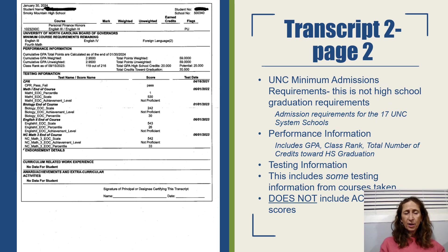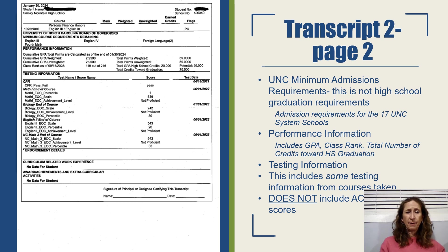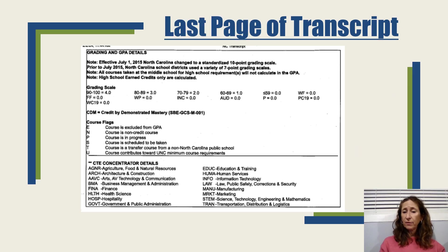The second page of the junior transcript has the same information as the other transcript, just with a little more testing information listed because the student has completed more testing. One thing I want to point out is there's no ACT information listed on your high school transcript. So if you are applying to college, you have to actually send those scores yourself. The last page of every transcript is the legend — it explains grading and GPA details, what makes up an A, what each flag means, and some information about CTE concentrators.